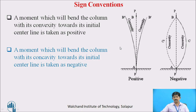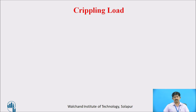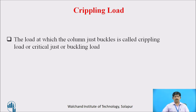Sign convention: a moment which tends the column to have convexity towards its initial centre line is taken as positive, and the moment which tends to bend the column having concavity towards the initial centre line is taken as negative. The load at which the column just buckles is known as the crippling load, or it is also known as the critical load or the buckling load.